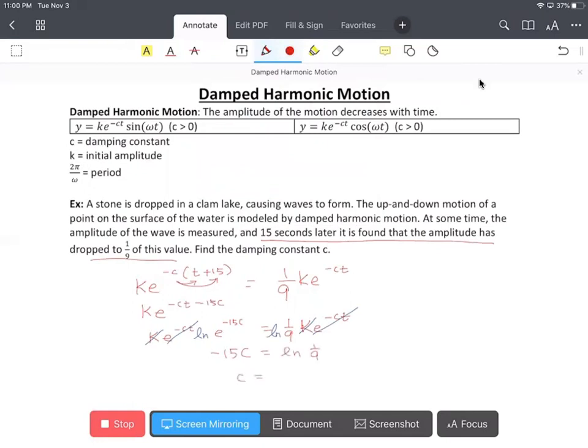And divide both sides by negative 15. And use your calculator. Then c is about 0.15.